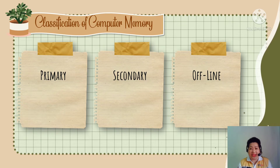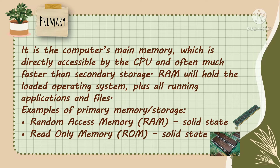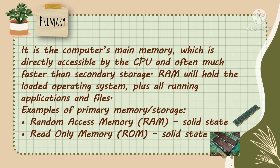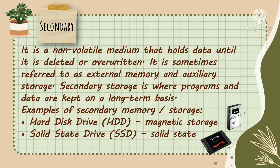Computer memory is classified into 3. We have Primary, Secondary, and Offline. Primary storage is the computer's main memory, which is directly accessible by the CPU and often much faster than secondary storage. Examples are Random Access Memory or RAM, and Read-Only Memory or ROM. Secondary storage is where programs and data are kept on a long-term basis. Examples are Hard Disk Drive or HDD, and Solid State Drive or SSD.